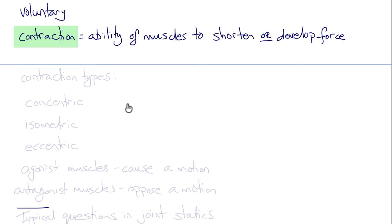So there are several types of contraction. Concentric contractions are muscle contractions that result in muscle shortening.